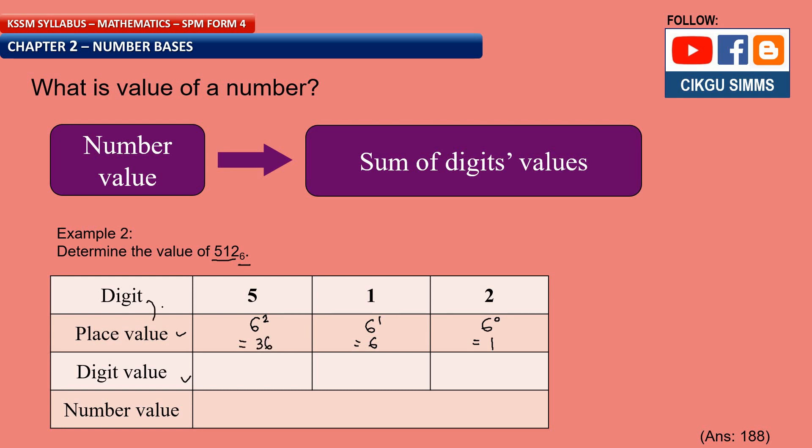And digit value is digit times place value. So 2 times 1 is 2. 1 times 6, 6. 5 times 36, 180. So the number value is you add all of this up. So it's 180 plus 6 plus 2. So you end up 188. It's the number value for this 5, 1, 2 base 6.